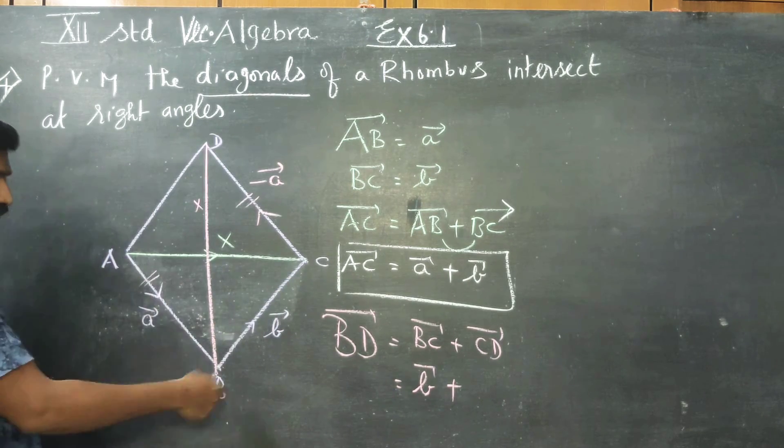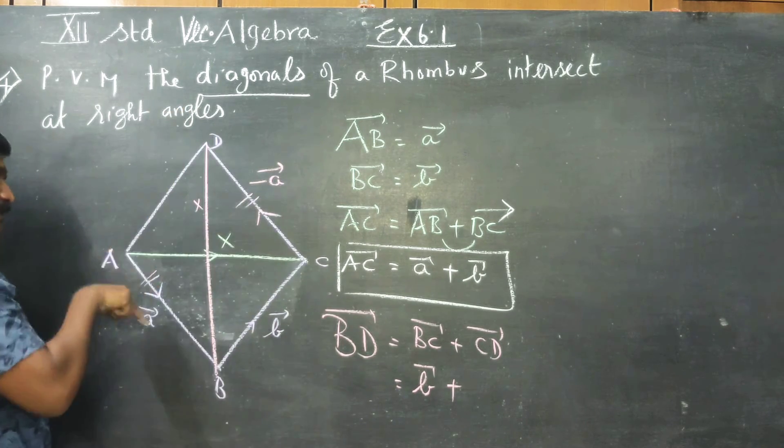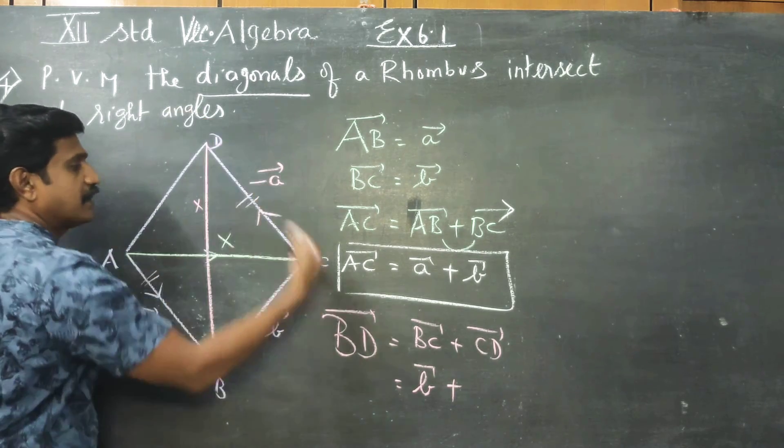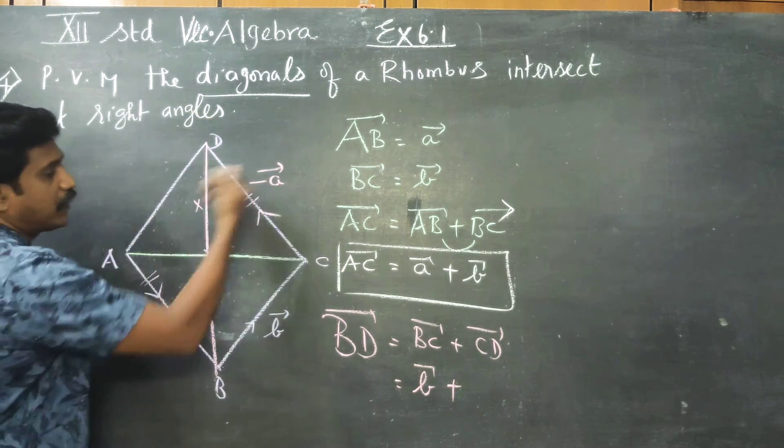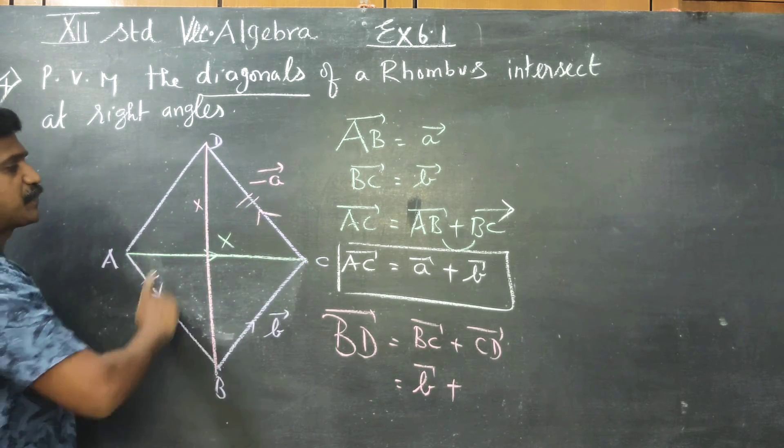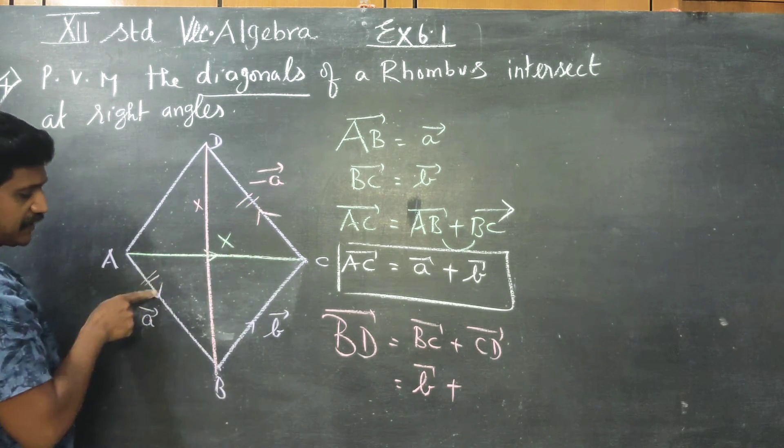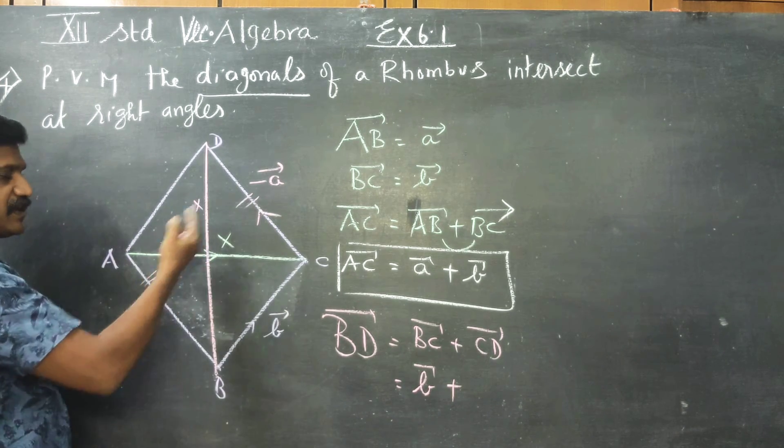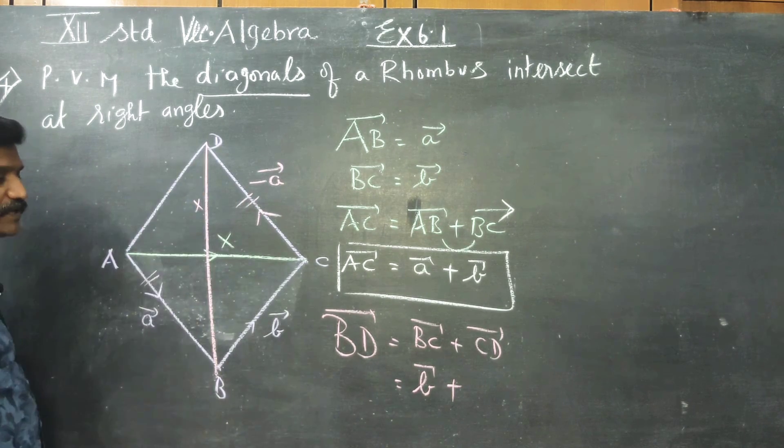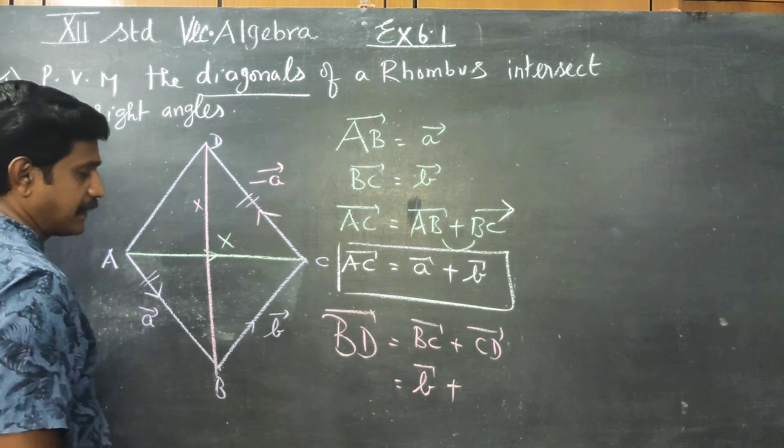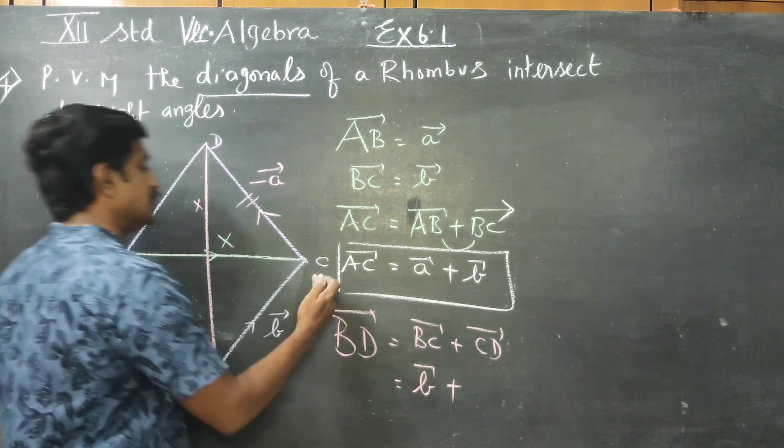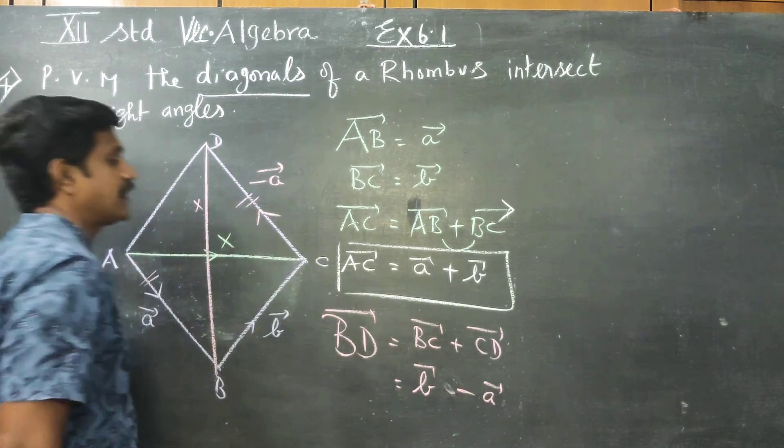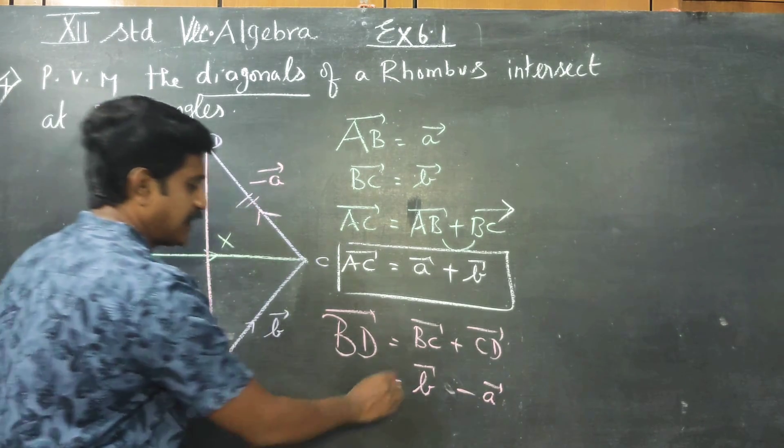This is plus a vector, this is minus a vector, because AB and CD are parallel vectors but opposite direction. CD is minus a vector. This is my second diagonal.